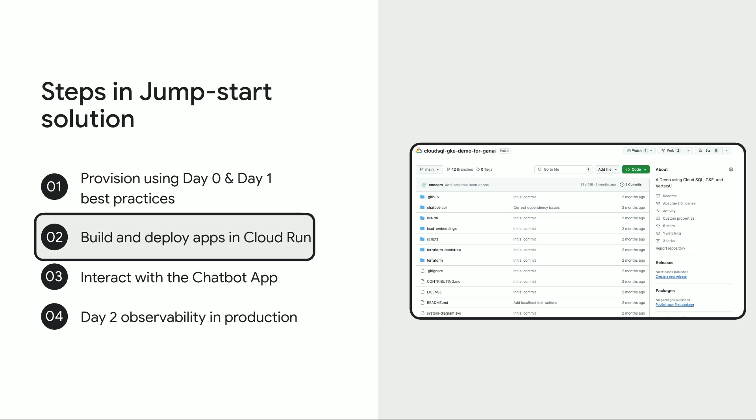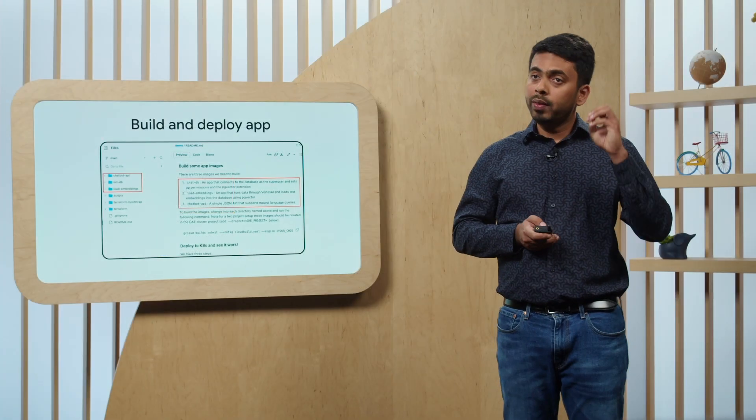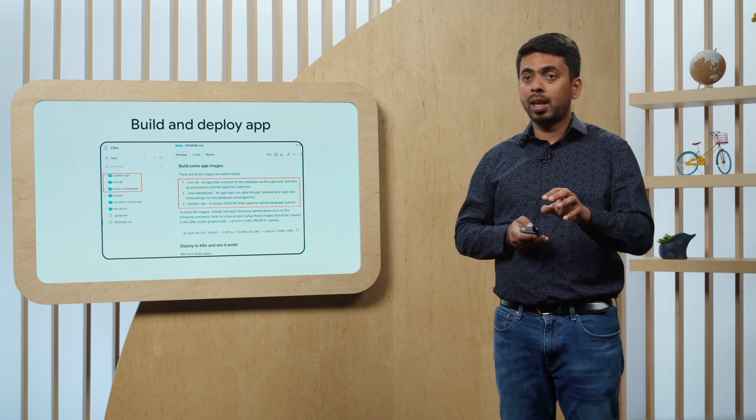The second step is to build and deploy the application. We have provided all the application files for you — there are three: the first is initDB, used to set up extensions and permissions on the database; the second is load embeddings, used to convert columns in your database into vector embeddings; and the third is the chatbot API application, which builds an interactive chatbot interface for end users. Within a few easy steps, you can build and deploy all these applications in Cloud Run, which scales on demand based on your application's needs.